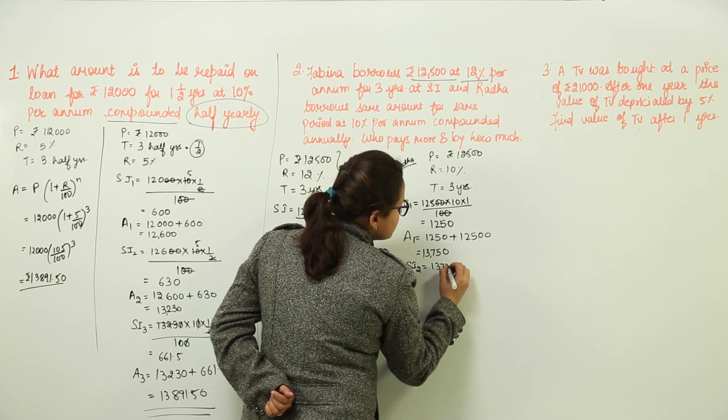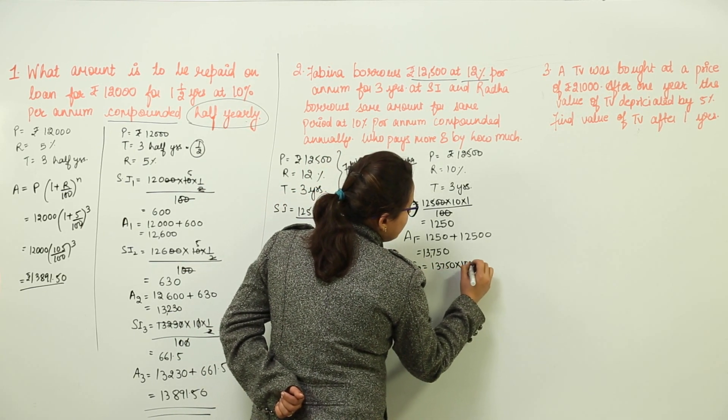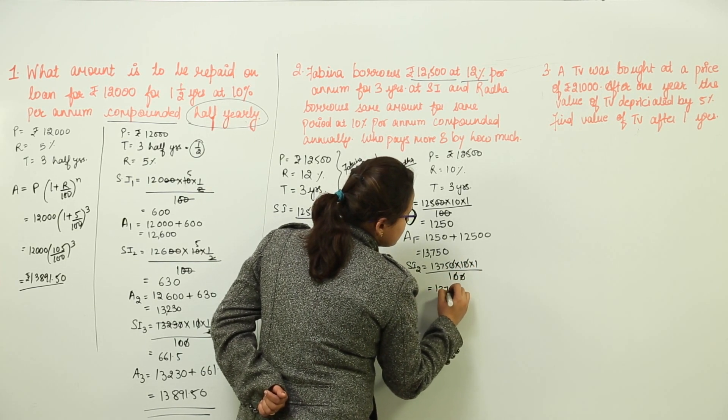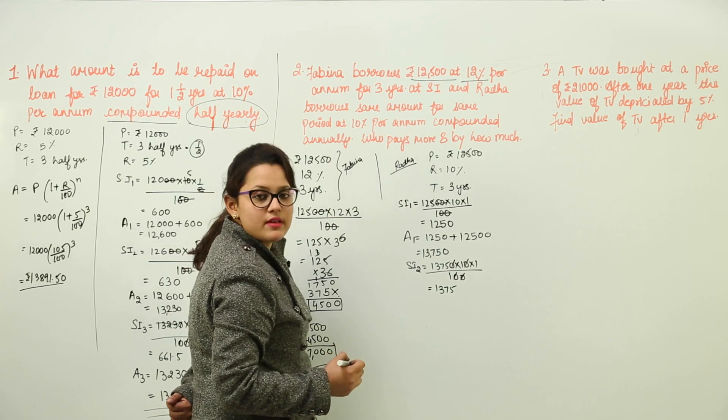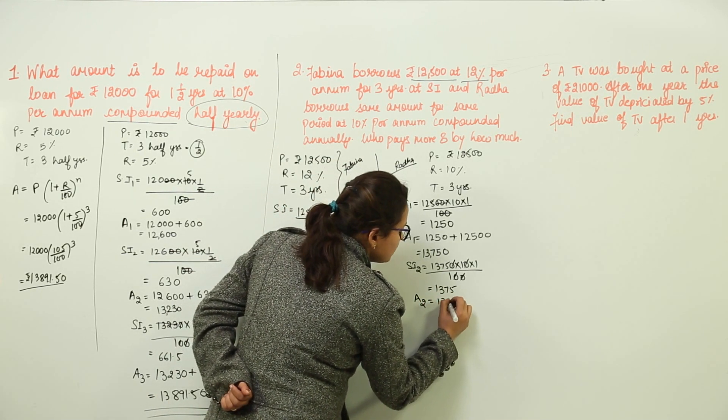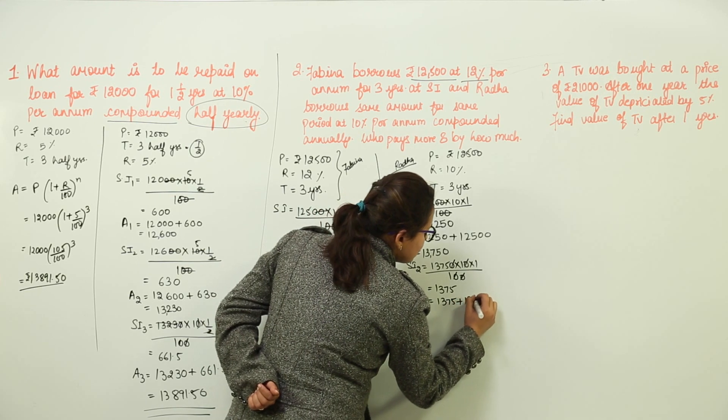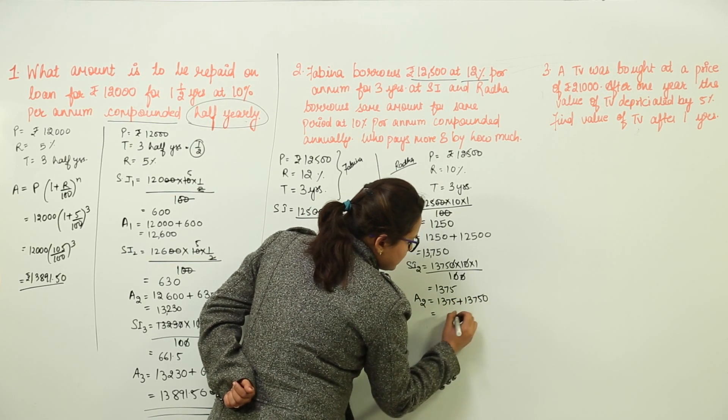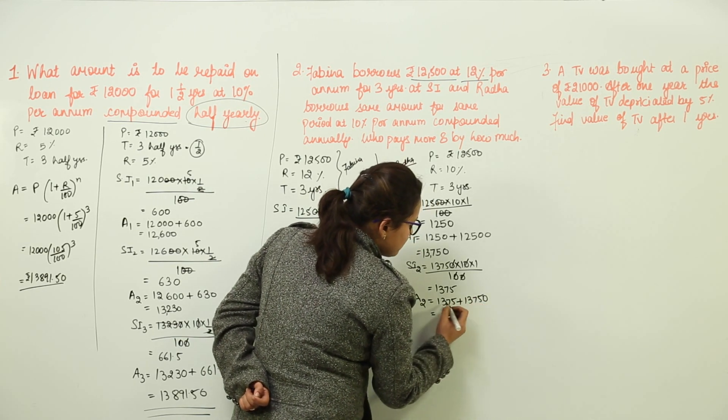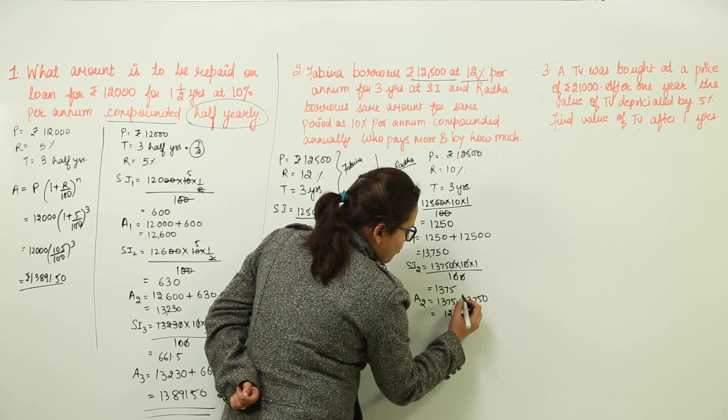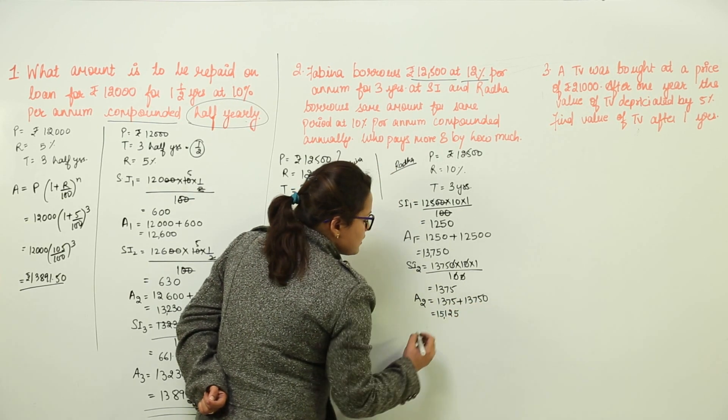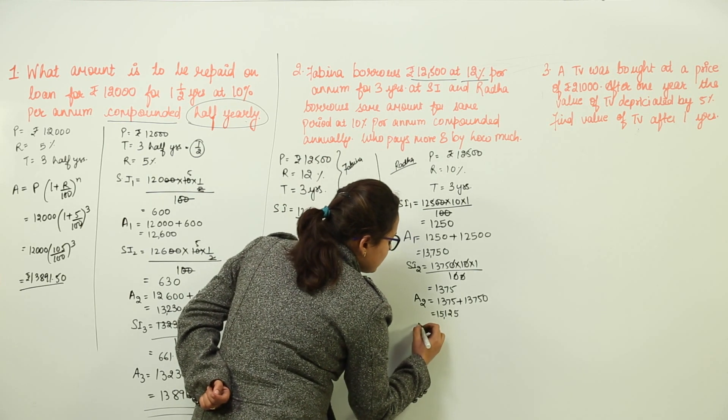This amount becomes the principal for the second year. That would be 13,750 into 10 into 1 upon 100. The simple interest comes out to be 1,375. The amount for second year would be 1,375 plus 13,750. That gives us 15,125, which becomes the amount for second year.